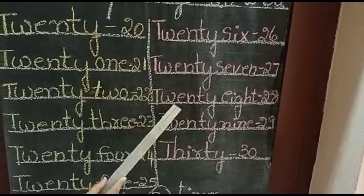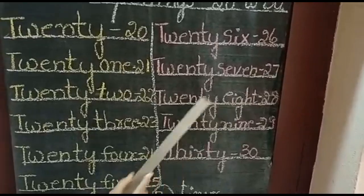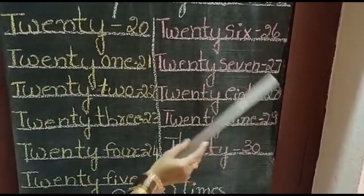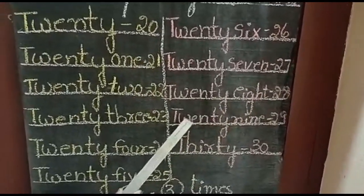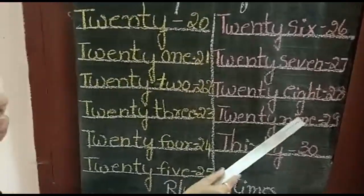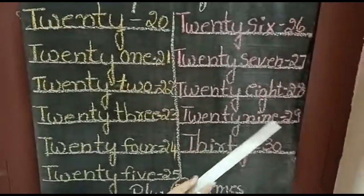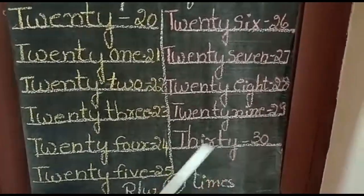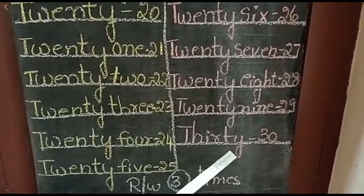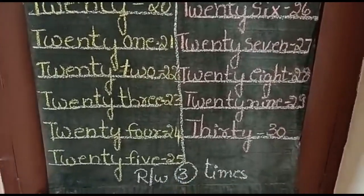T-W-E-N-T-Y E-I-G-H-T, 28. 2-8, 28. T-W-E-N-T-Y N-I-N-E, 29. 2-9, 29. T-H-I-R-T-Y, 30. 3-0, 30.